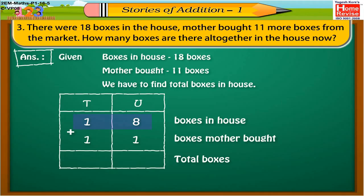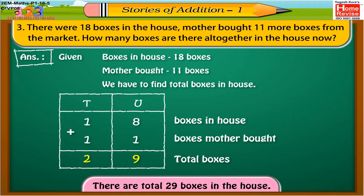On adding 1 ten 8 units with 1 ten 1 unit, we get 2 tens 9 units. Therefore, addition is 29. Therefore, there are total 29 boxes in the house.